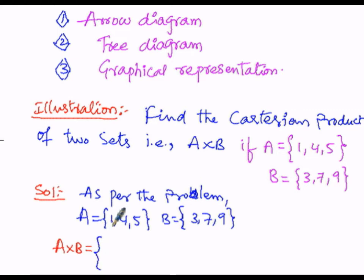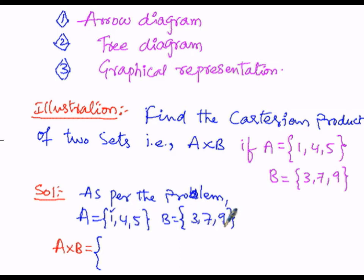First, we find the ordered pairs with 1: (1,3), (1,7), (1,9). Then with 4: (4,3), (4,7), (4,9). Similarly with 5: (5,3), (5,7), (5,9). These are the ordered pairs of this Cartesian product.